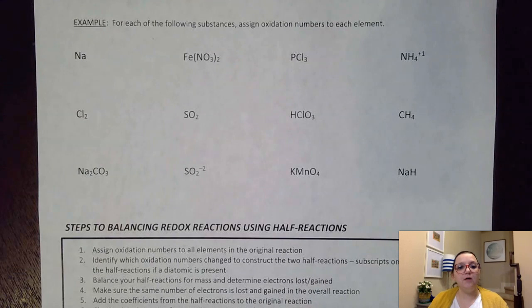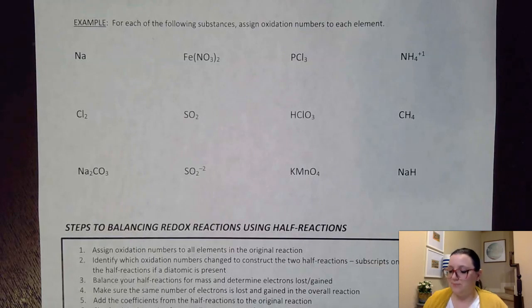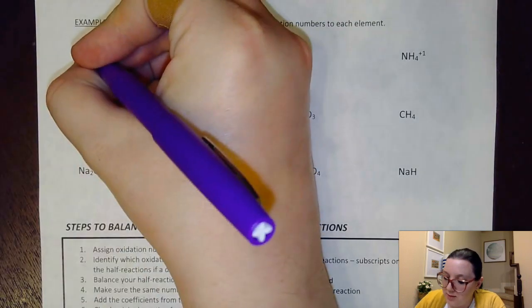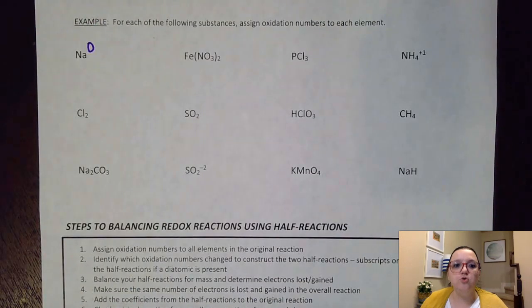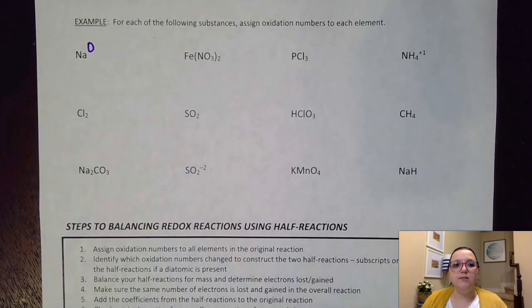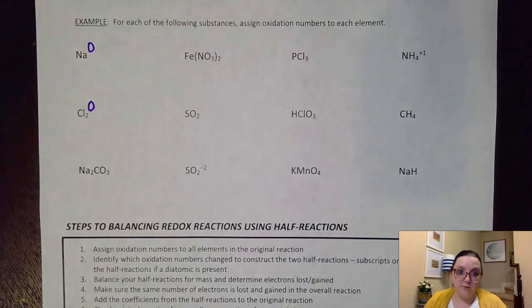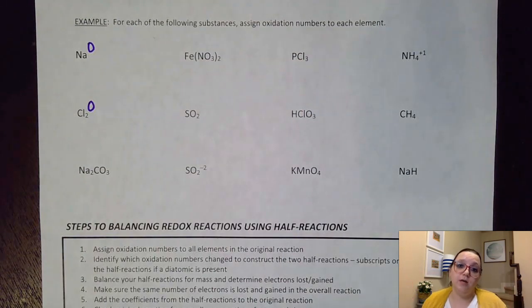Starting with easy ones: sodium by itself, not shown with any charge and not part of a compound, has an oxidation number of zero — it's neutral sodium all on its own. Next, Cl2: even though it's diatomic, it's still an element by itself. Nobody's pulling on the electrons more than another; everything is shared equally, so the oxidation number is zero. Elements by themselves with no charge shown are assumed to have oxidation numbers of zero.